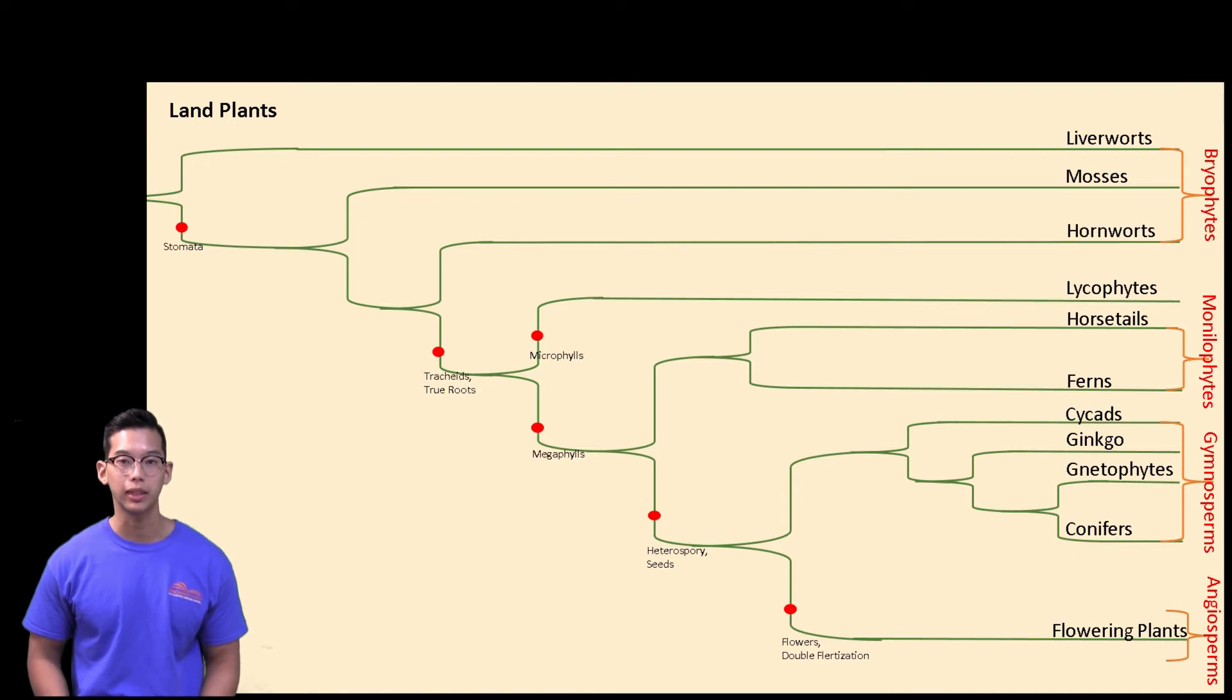Angiosperms are known as our flowering plants, and their synapomorphies include flowers, fruits, and double fertilization.